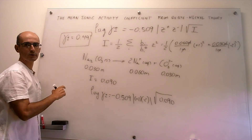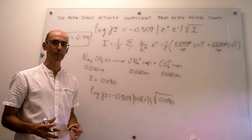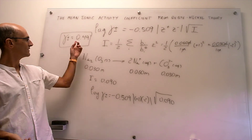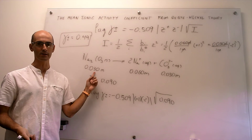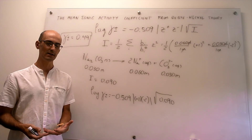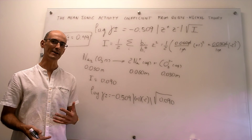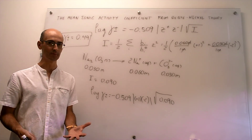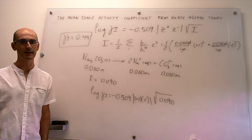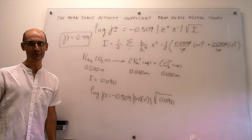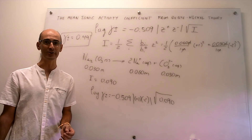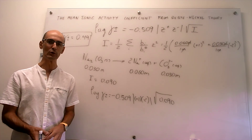Notice how this activity coefficient is actually quite far from 1, which would signal ideal behavior. We're getting far from ideality even with a very dilute solution — the concentration here is only 30 millimolar. This is a nice example of how ionic solutions tend to deviate from ideality readily, and it will be almost impossible to find ideal ionic solutions. We will always need to take into consideration the mean ionic activity coefficients. In this video, we have seen how to obtain a mean ionic activity coefficient from the Debye-Hückel theory of electrolytes.